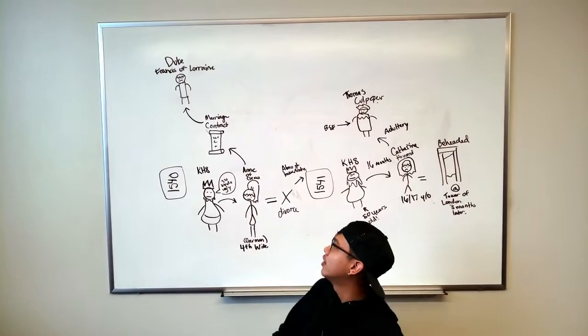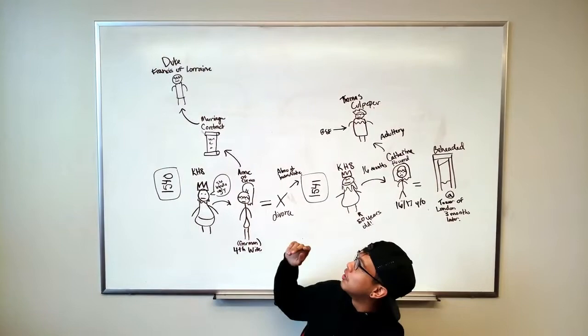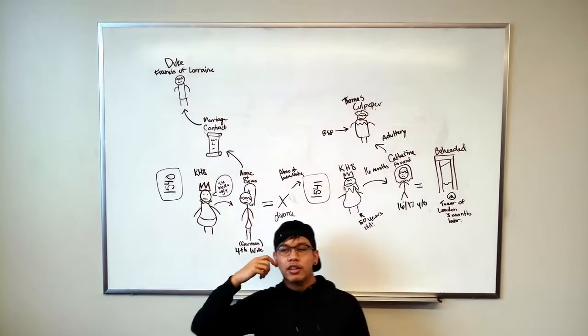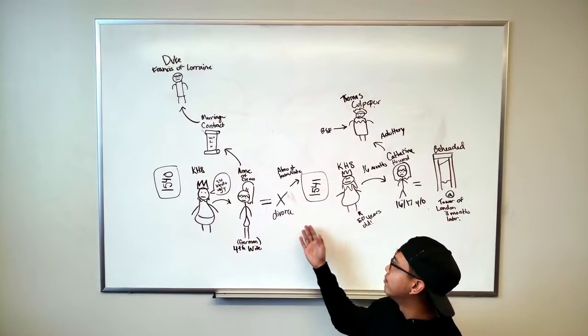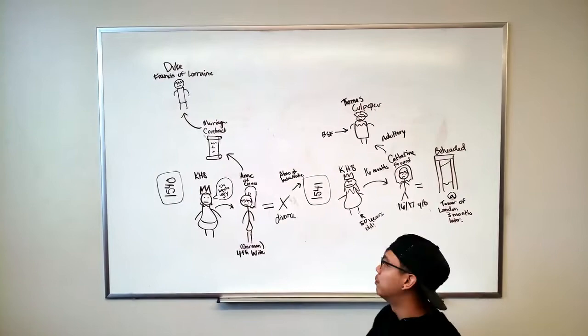So during the research, he found out that she actually had a marriage contract with the Duke Francis of Lorraine, which is somewhere in Germany. And that was the perfect excuse to divorce her. So that's basically it. That was literally like a one month marriage.